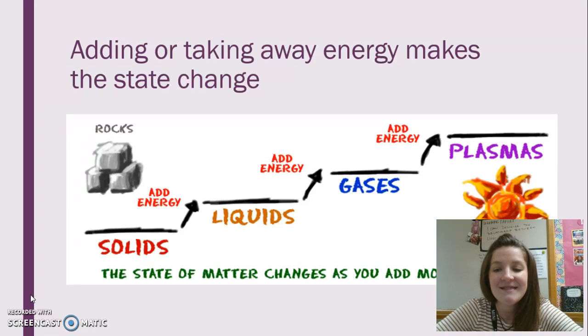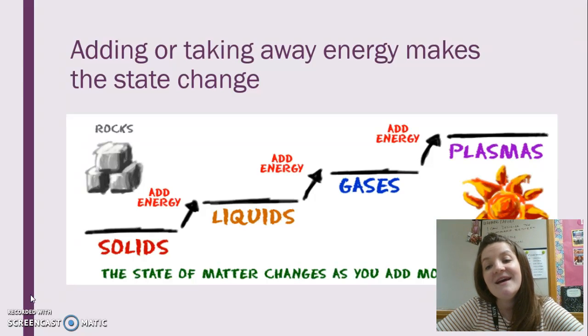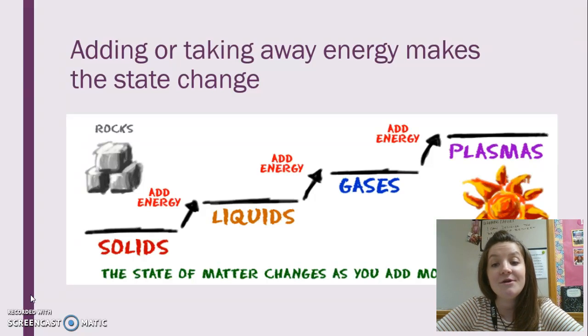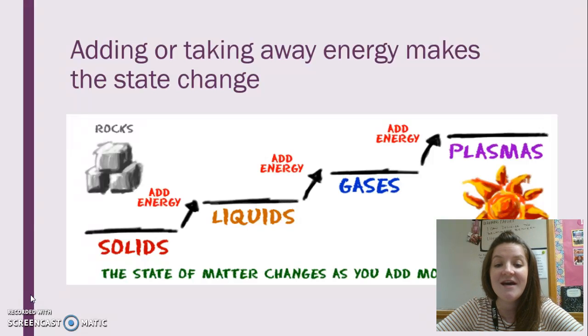It's adding energy that causes the particles to change and rearrange, and that's how we get state changes. When you start with a solid and you add energy to it, it can change into a liquid. Adding more energy changes it into a gas, and so on. We can go backwards as well. When we have a gas and we take away energy, the particles are going to move slower, and they'll move closer together, forming a liquid. Removing more energy causes them to change back into a solid.